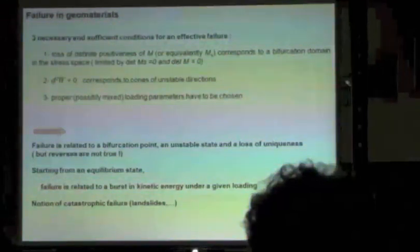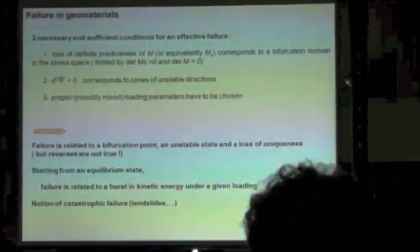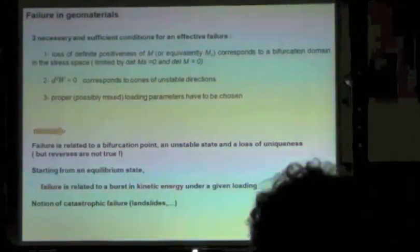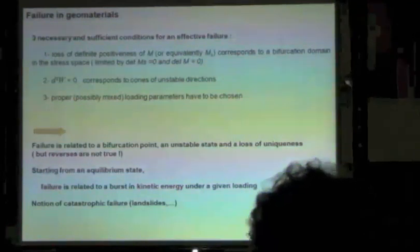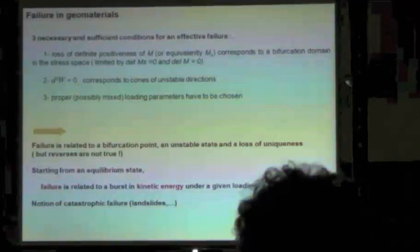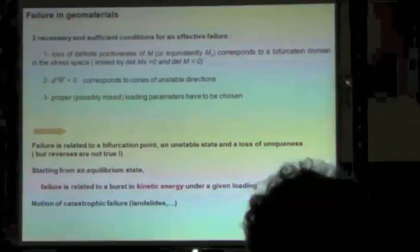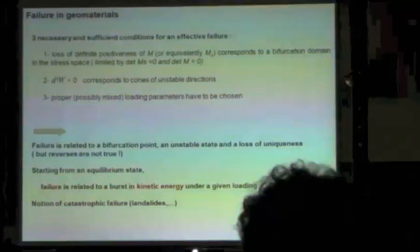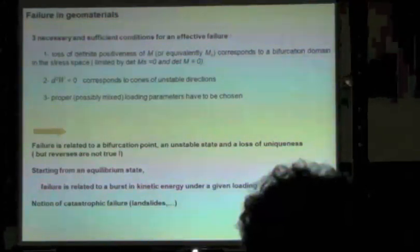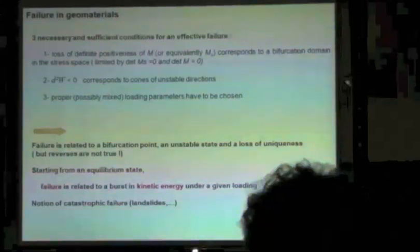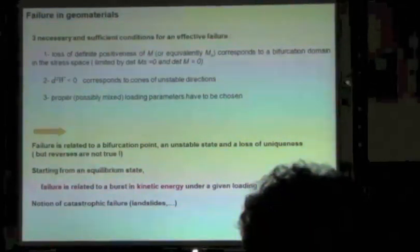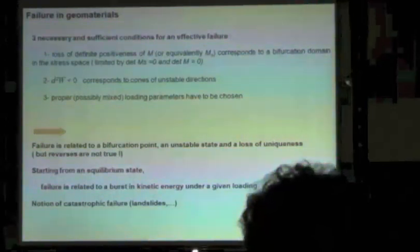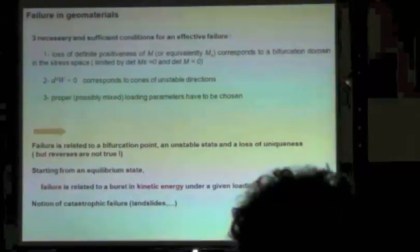Finally, there are three necessary and sufficient conditions for an effective failure. First, the loss of definite positiveness of the elastoplastic constitutive operator — the second-order work — meaning we must be inside the bifurcation domain. Second, the current loading direction must belong to the instability cone. Third, you must consider a proper loading parameter — the control parameter — for your loading path.